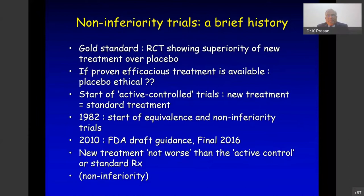Active control trials are where you want to show that a new treatment is similar to or the same as a standard treatment as far as its effects are concerned. This started in 1982, and people called them equivalence trials. Some people used the term non-inferiority trials. In 2010, the FDA of the USA issued a draft guidance for non-inferiority trials, which was finalized in 2016.